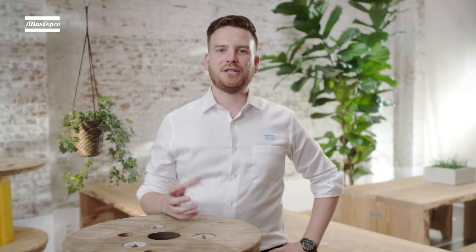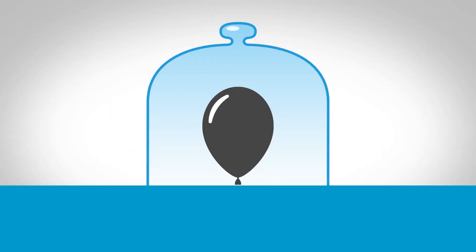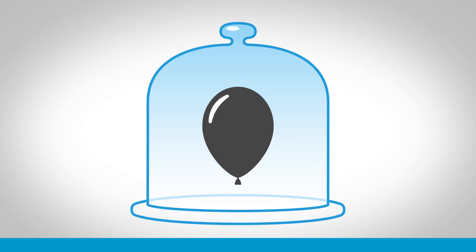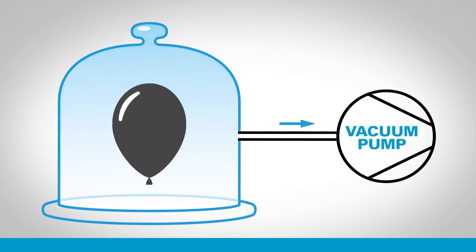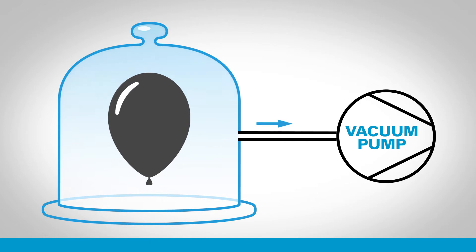Let's use a balloon in a chamber to improve our understanding of the relationship between pressure and volume on two different types of process. The first setup is a sealed balloon inside a chamber at atmospheric pressure. When we start to pump gas out of the chamber, the remaining molecules spread out to fill the volume and as a result the pressure reduces.